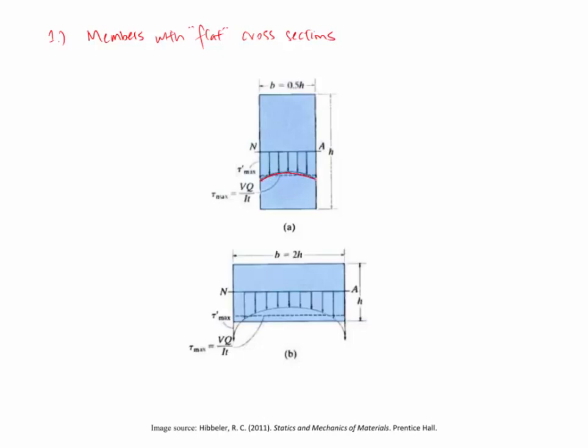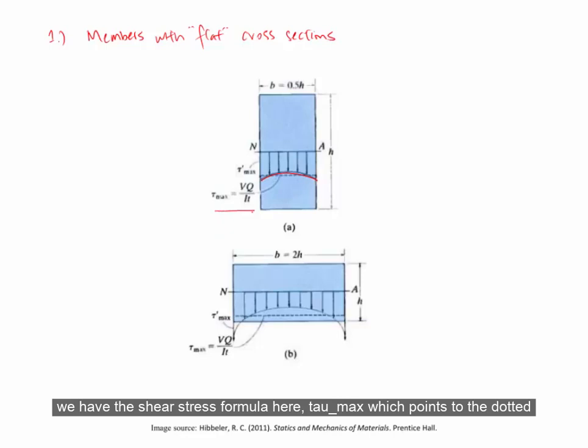This is the curve distribution that varies along the width of the cross-section. In comparison, we have the shear stress formula tau max, which points to the dotted line, showing a constant distribution calculated across the width of the cross-section.